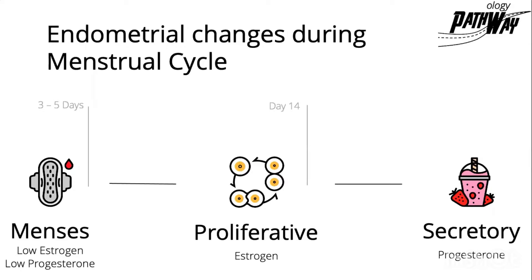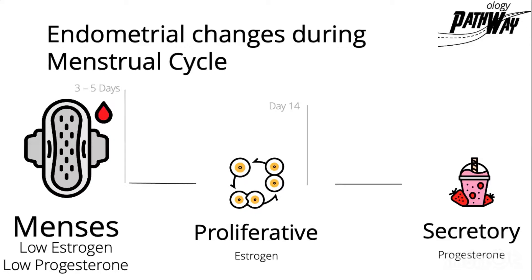Endometrial changes during the menstrual cycle start with the menses, which lasts from 3 to 5 days. During this phase, we have very low estrogen levels and very low progesterone levels.